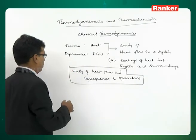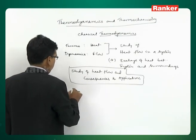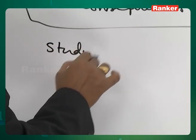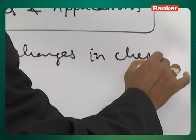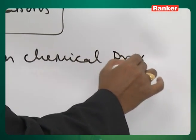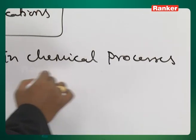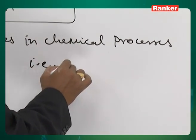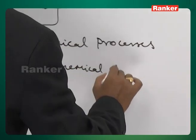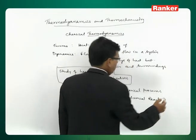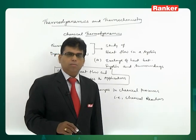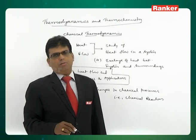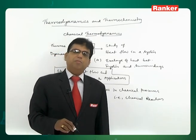Chemical thermodynamics mainly refers to the study of heat changes in chemical processes, that is chemical reactions. This is also why we call it reaction thermodynamics — thermodynamics in reference to chemical reactions — referring to the thermodynamical changes that occur in a chemical reaction.